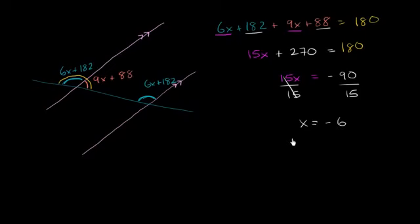We've made progress—we've figured out that x equals negative 6. But we still need to find what these angles equal. This angle, 9x plus 88, equals 9 times negative 6 plus 88. 9 times negative 6 is negative 54.